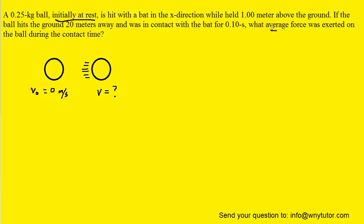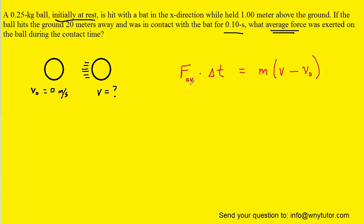The question is asking us for the average force, so let's take a look at one of the equations that relates average force to the velocities as well as the time interval. Here is that equation — it's known as the impulse-momentum theorem. Basically, we have the average force multiplied by the time interval equaling the mass times the change in velocity. Some textbooks will write this right-hand side as delta p, but the way we have written it is equivalent.